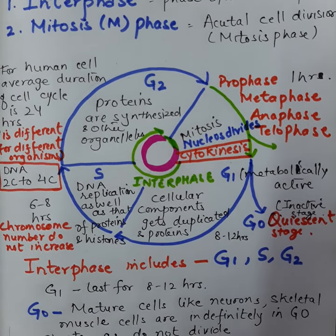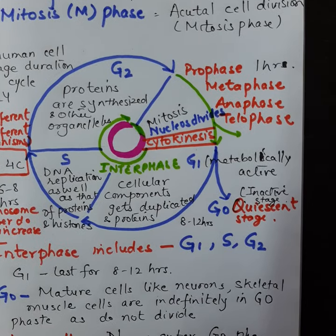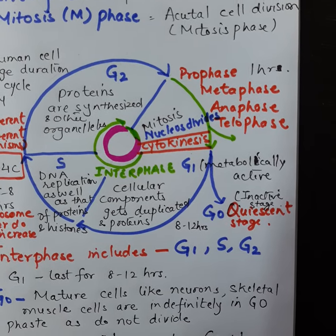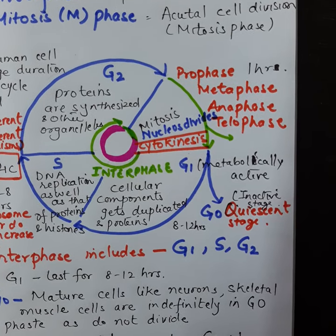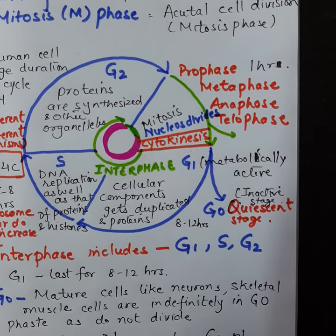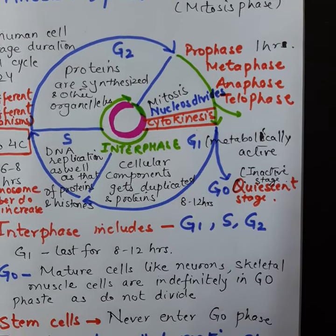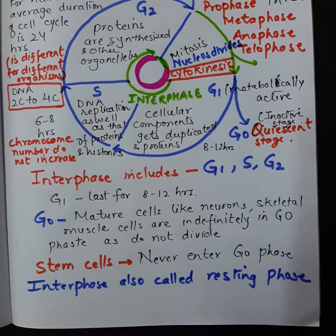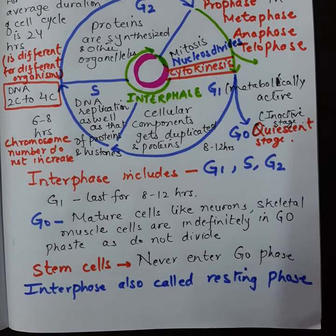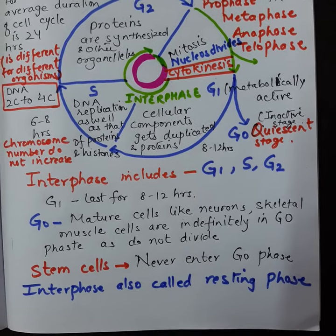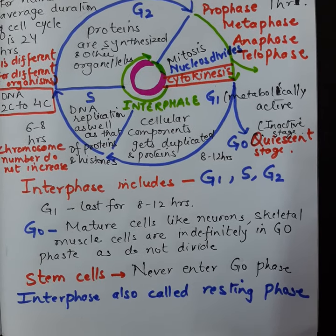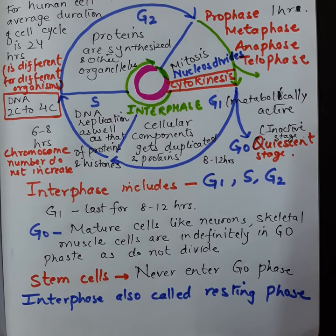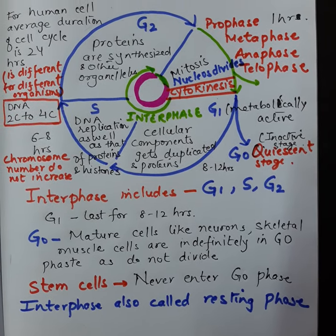The M phase is the actual mitotic or cell division phase, which is again divided into different phases. G0, as you can see, is a quiescent stage — some cells that do not divide enter the G0 stage, like neuron cells.